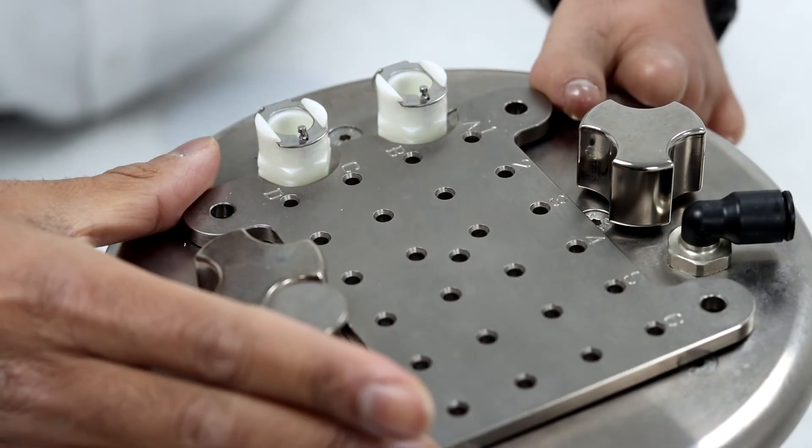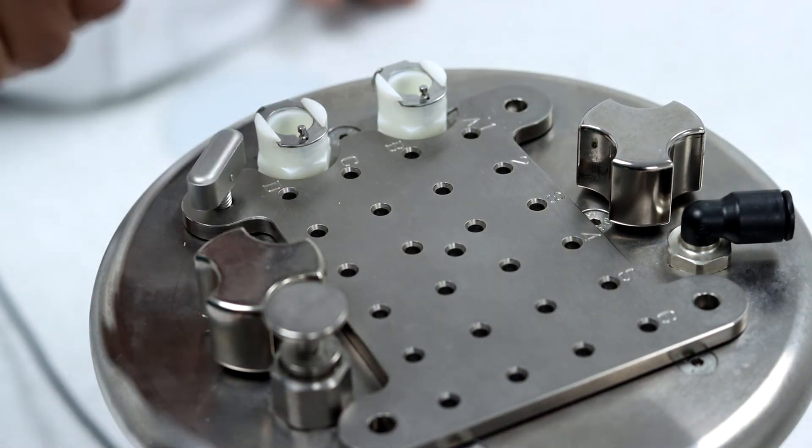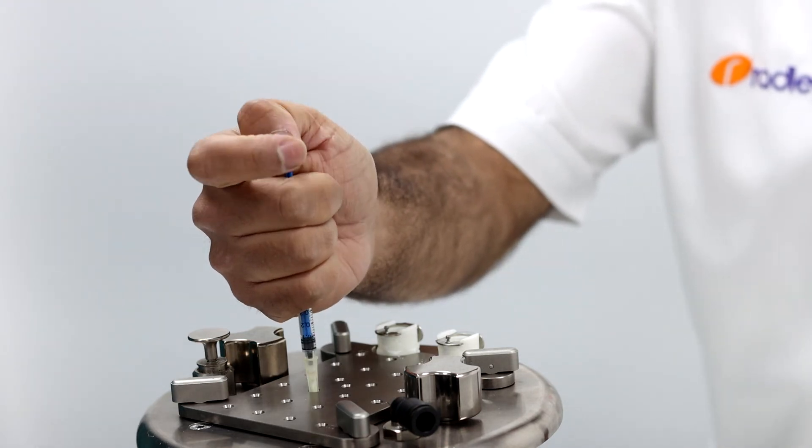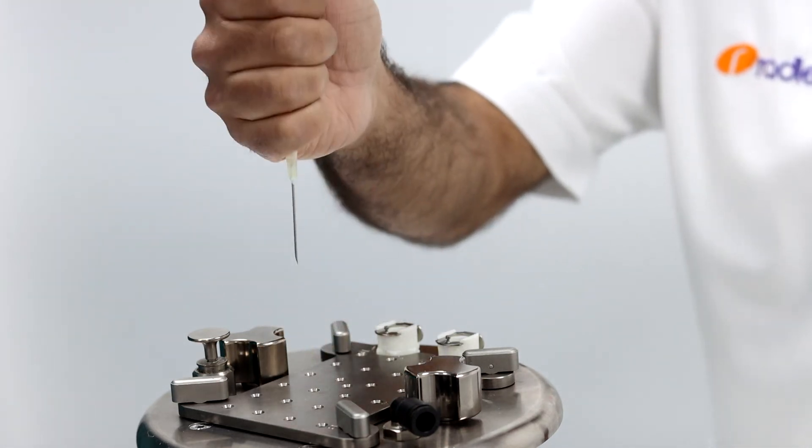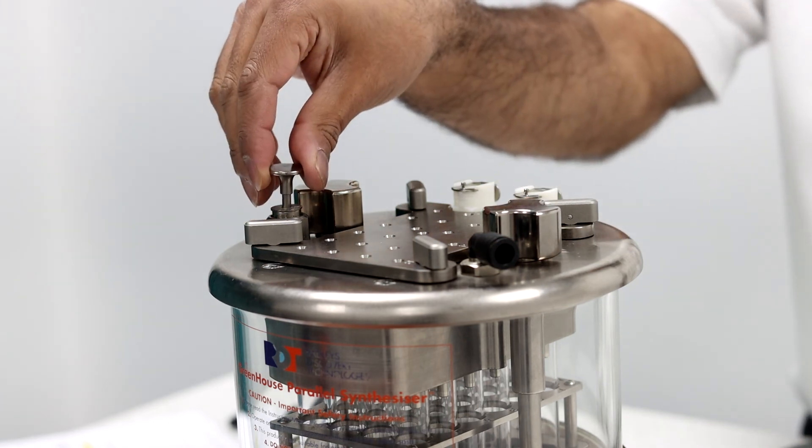Before making your reagent additions it is important to relieve any pressure from within the chamber otherwise you might not be able to inject your reagent or they may splash back through the head. To do this fully lift the relief valve to remove excess over pressure before you start.